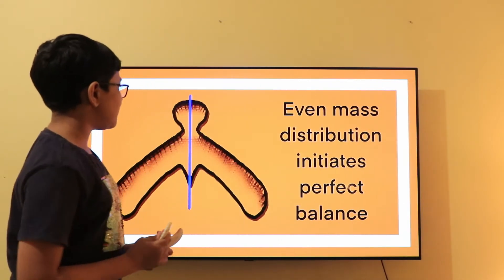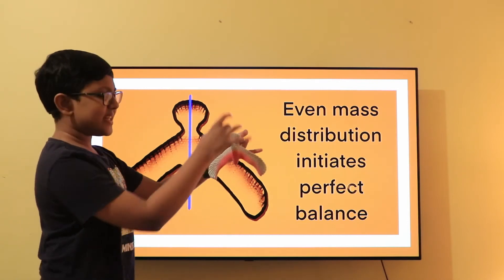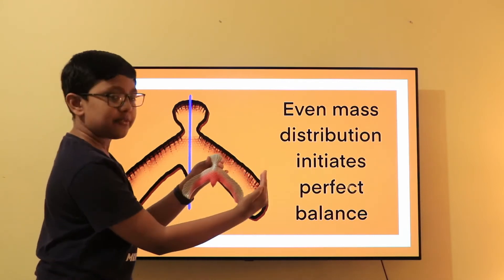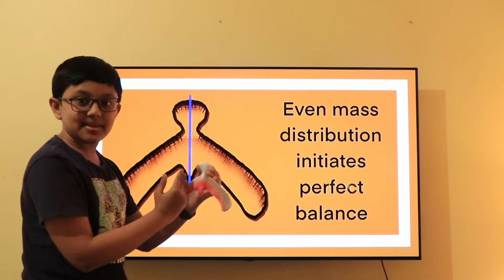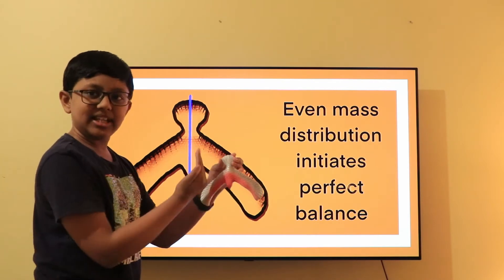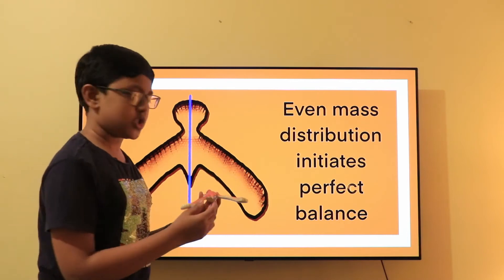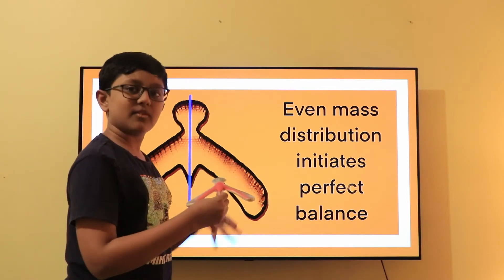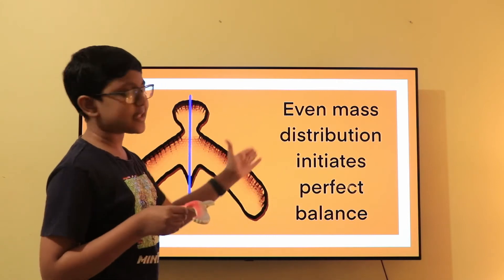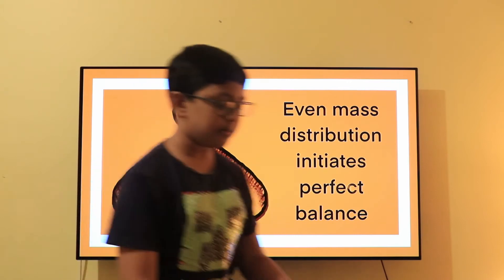So as you can see from the diagram here, when we put the bird in such an orientation, the right side of the bird and the left segment of the bird are both symmetrical. That is, mass is distributed evenly in this bird. Such an even mass distribution initiates the process of perfect balance. So we can see here that even mass distribution plays a vital role in the perfect balance of the bird.